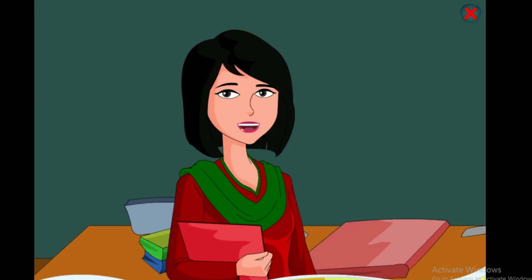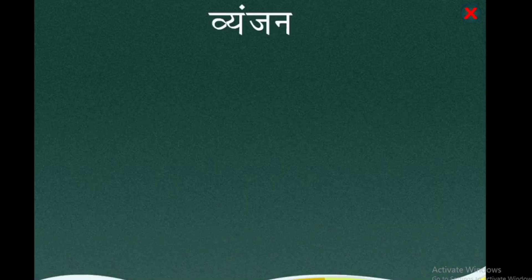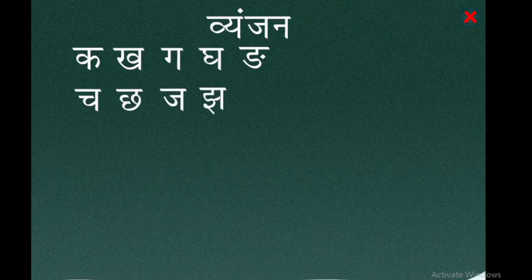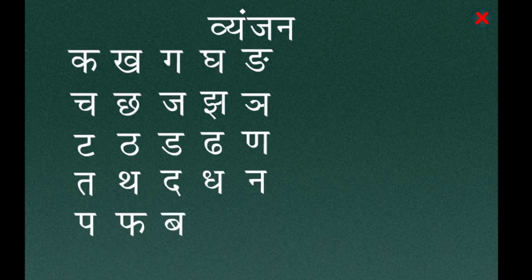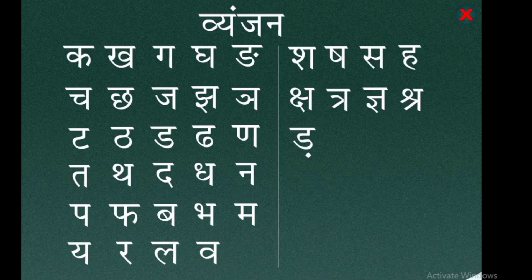Jinke ucharan mein hawa muh mein kahin na kahin takar kar bahar nikalti hai, ve vyanjan kehlaate hain. Ye hain vyanjan: क, च, प, फ, ब, भ, म, य, र, ल, व, श, ष, स, ह, क्ष, ग, च, र, ढ, ध।